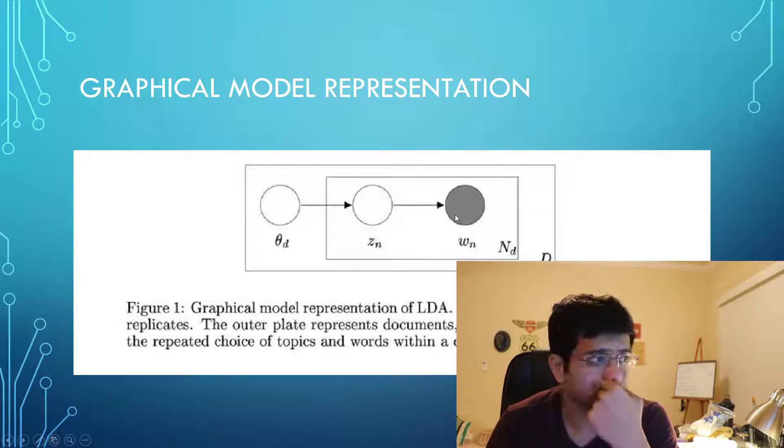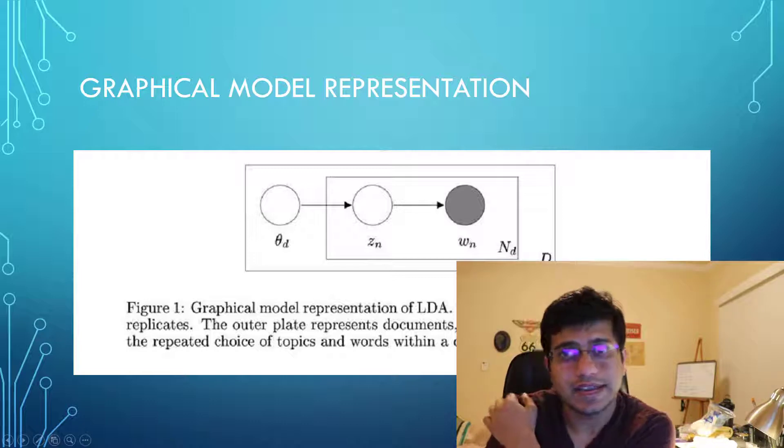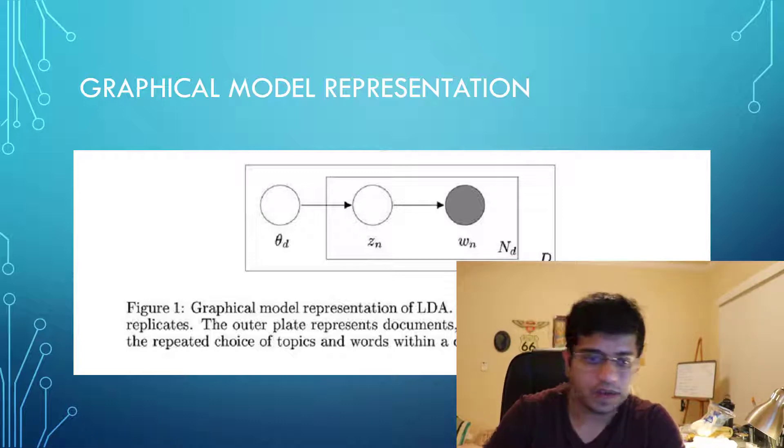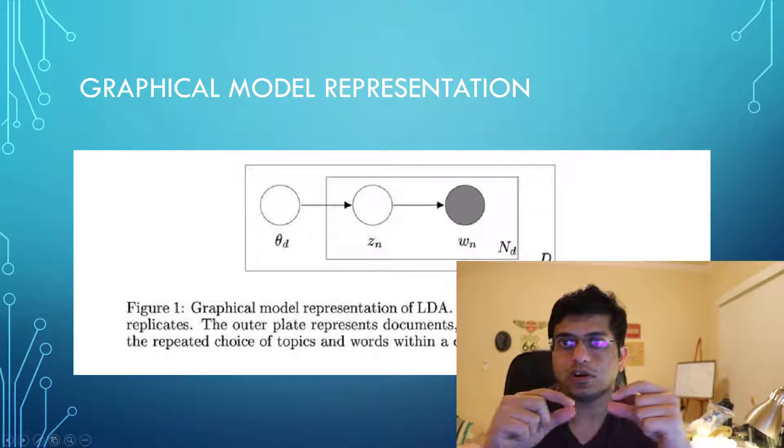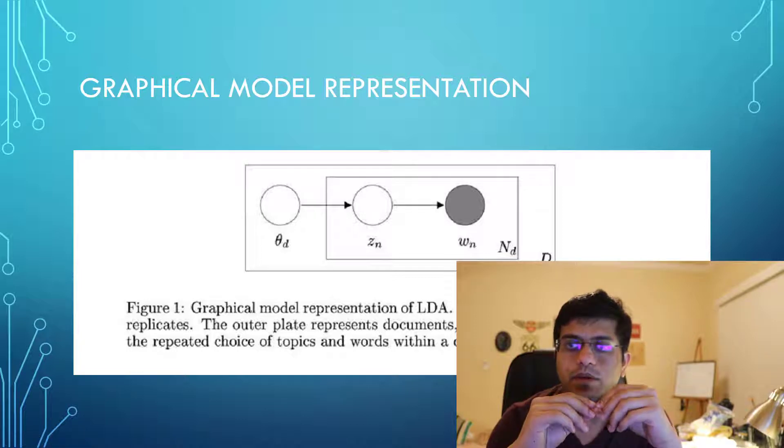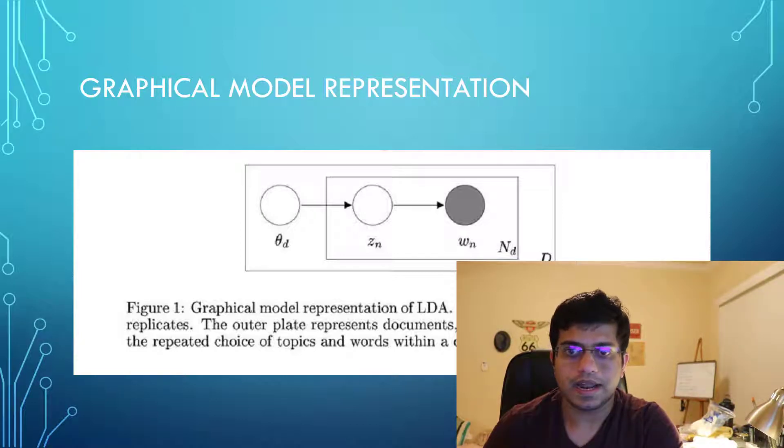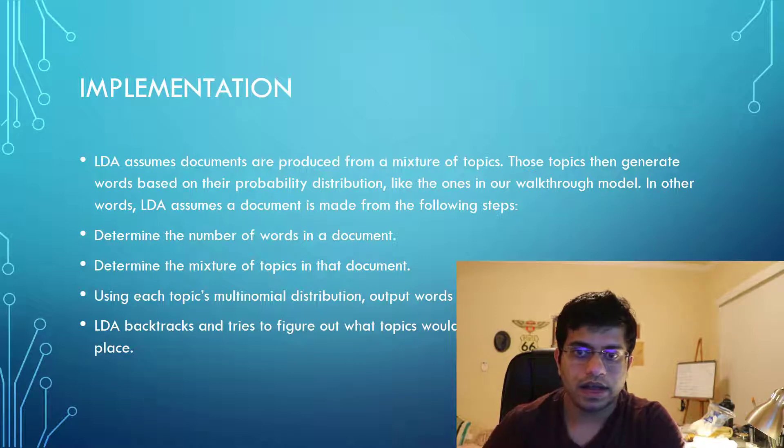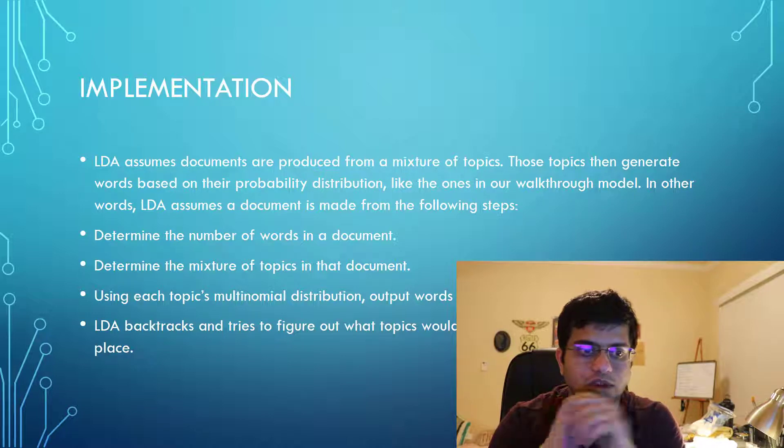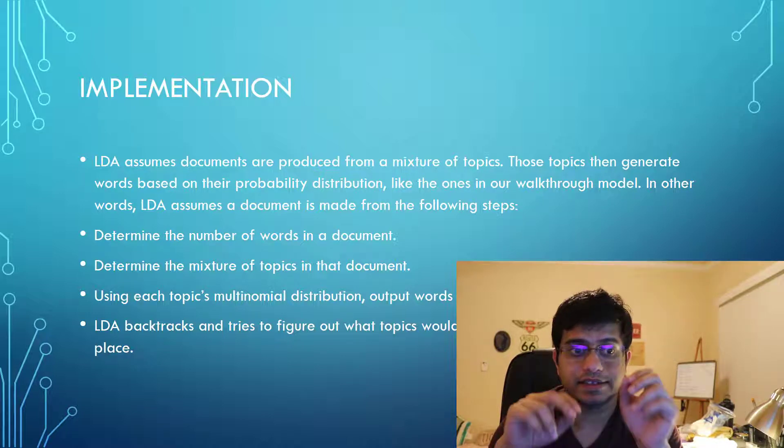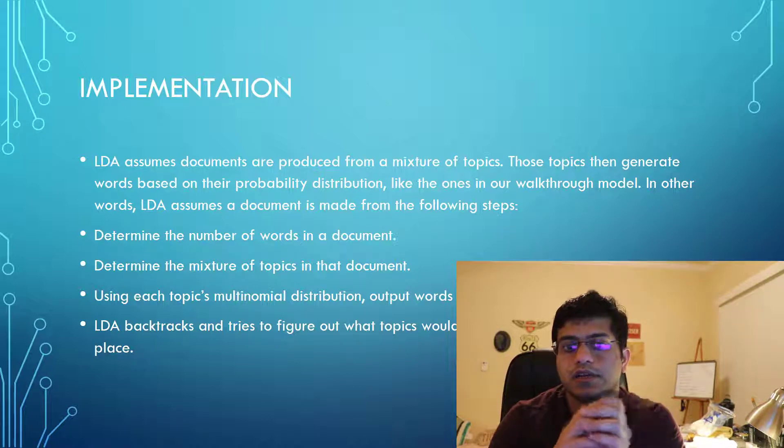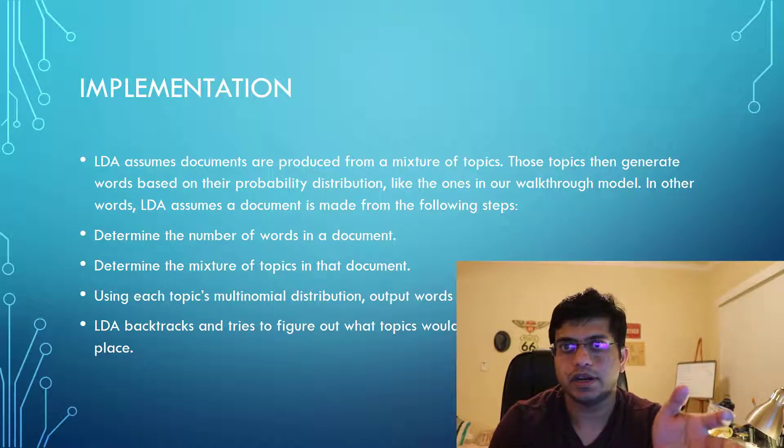How does LDA actually work? When I talked about the model it basically discusses probability of document. LDA says that okay, first go and determine the number of words in the document, second determine the mixture of topics in that document, and third come up with using each topic's multinomial distribution output words to fill the document's word slot and helps build the document.